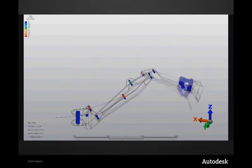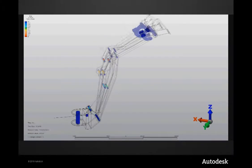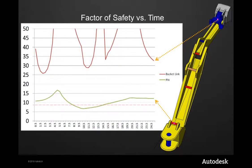Let's look at two example results from the factor of safety over time, which you see here plotted out. At the top, I have a part of my bucket linkage. The factor of safety of this part is well over 100 at times, and it gets down to just about 25. A factor of safety of 25 to me is over-designed, and I could realize significant weight and cost savings if I optimize this design.